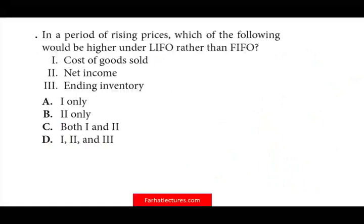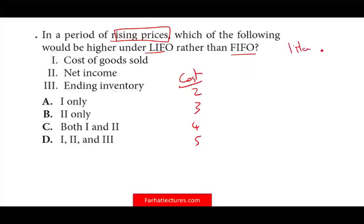Let's look at the next question. In a period of rising prices, which of the following would be higher under LIFO rather than FIFO? You cannot memorize these — you have to work an example quickly. Jot down some numbers: prices are rising — $2, $3, $4, $5. That's my cost, and I sold one item for $6.